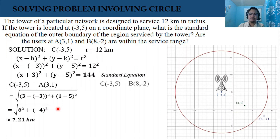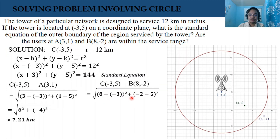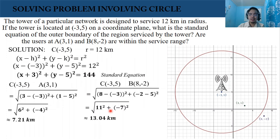For point B, we're going to also determine the distance. We have the square root of the sum of quantity 8 minus negative 3 squared and negative 2 minus 5 squared — that is 11 squared plus negative 7 squared — and the distance between these two points is approximately 13.04 kilometers. That is why point B is outside the service range of our tower.